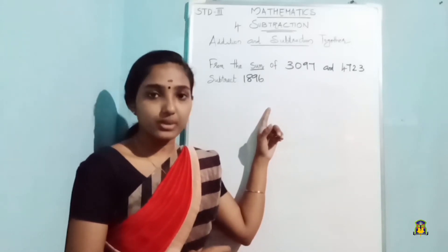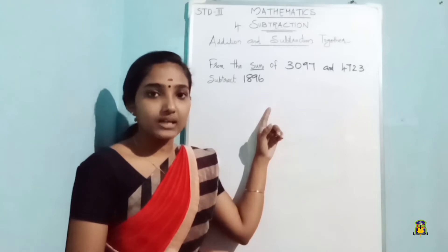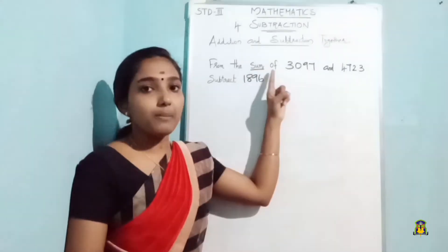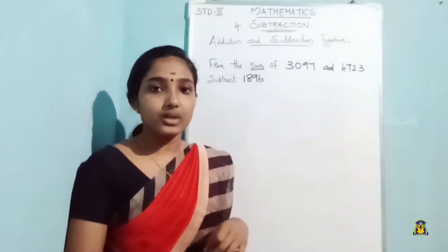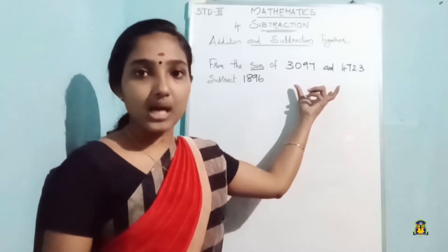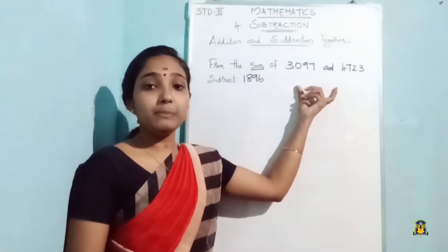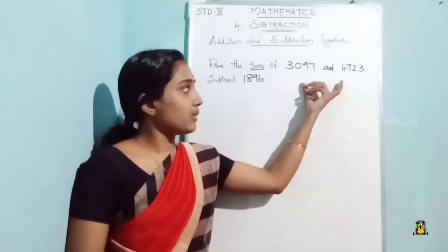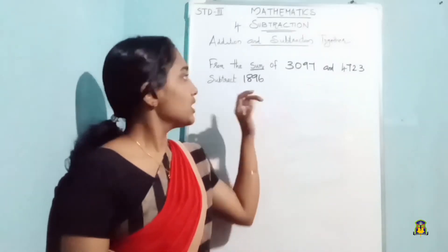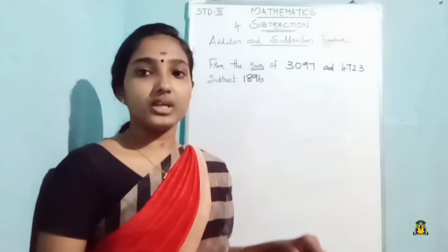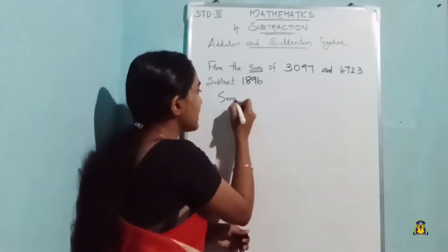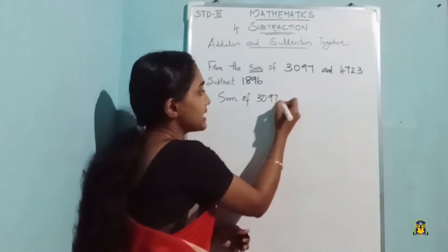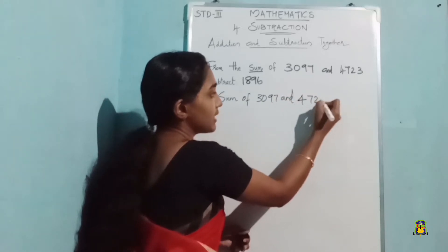So for this question we have to do addition also. We have to find the sum of 3097 and 4723, and from that sum we have to subtract 1896. So here two operations are coming together — first we have to find the sum of 3097 and 4723.